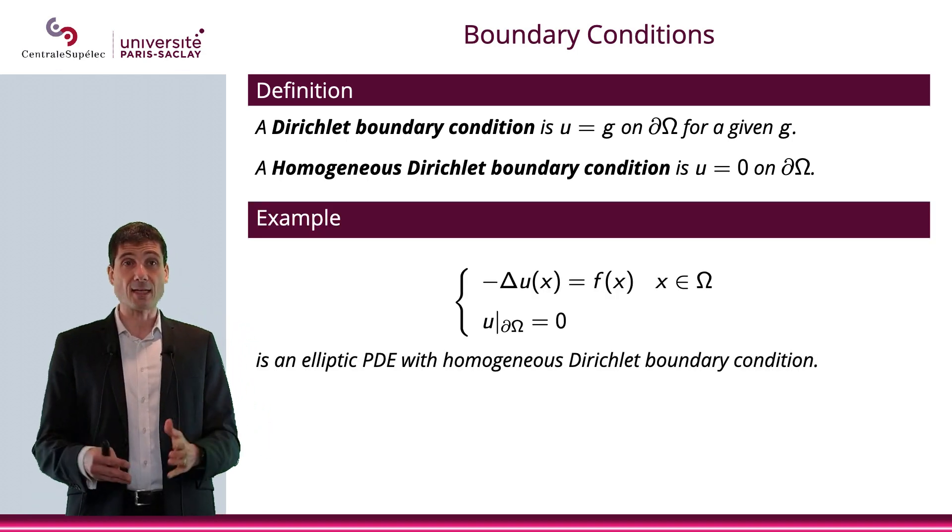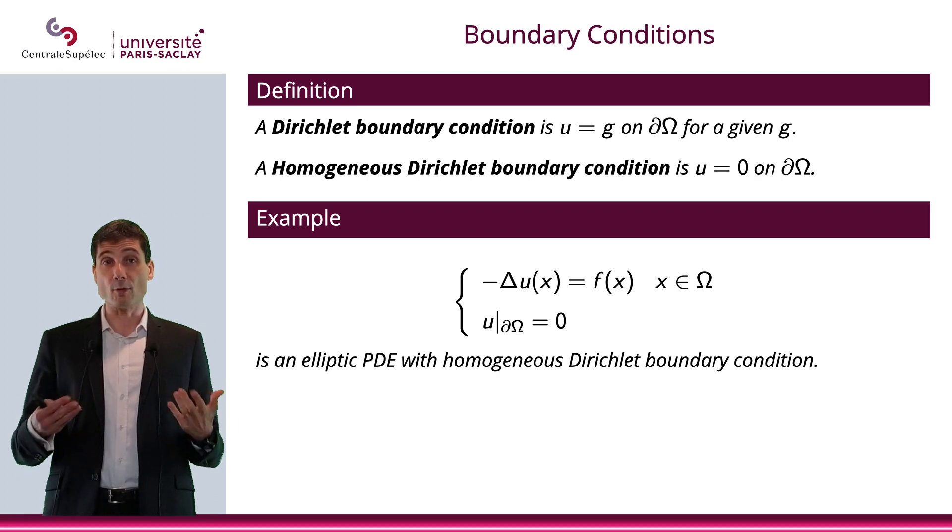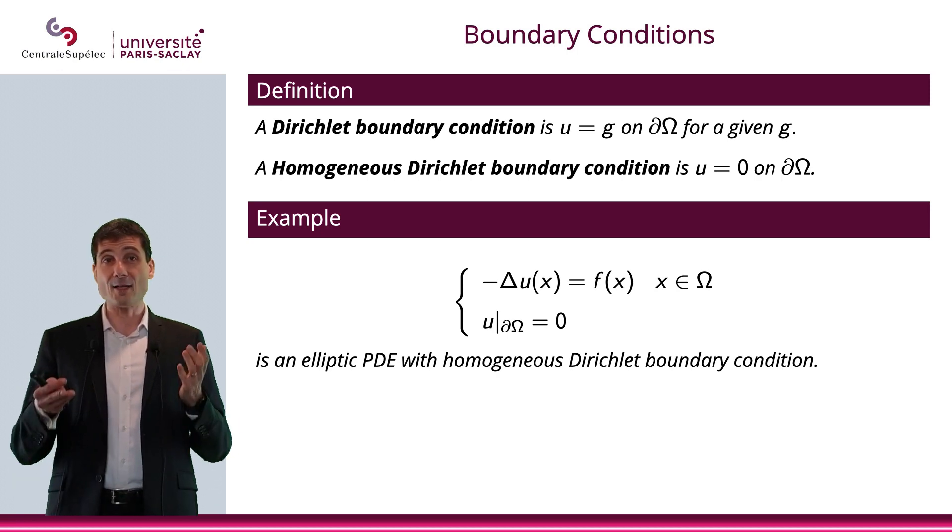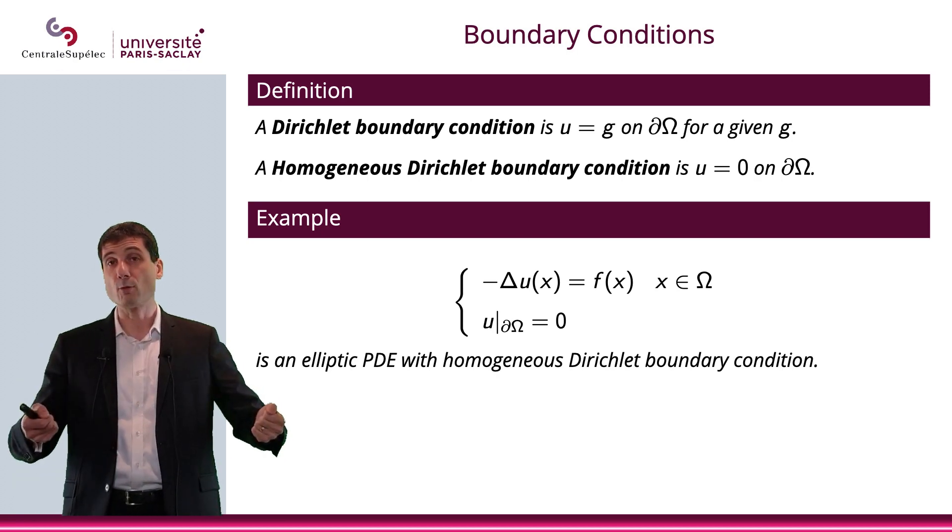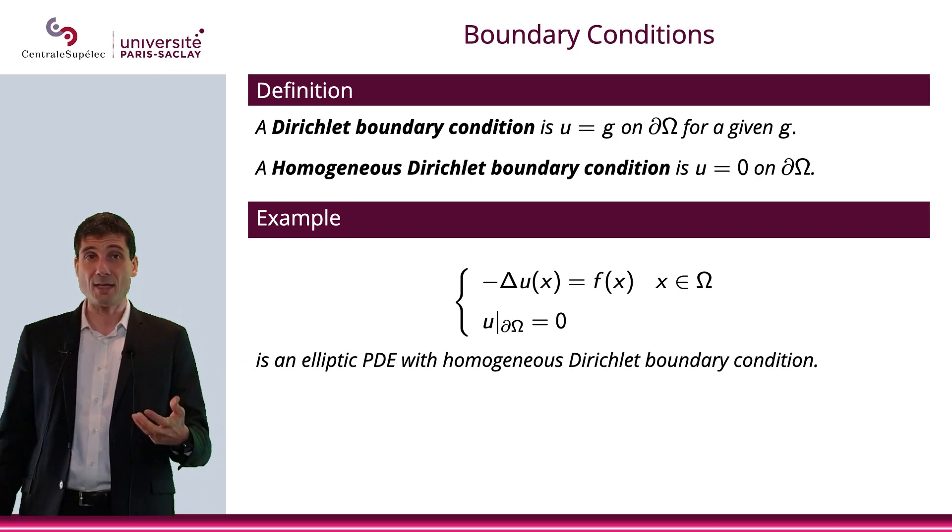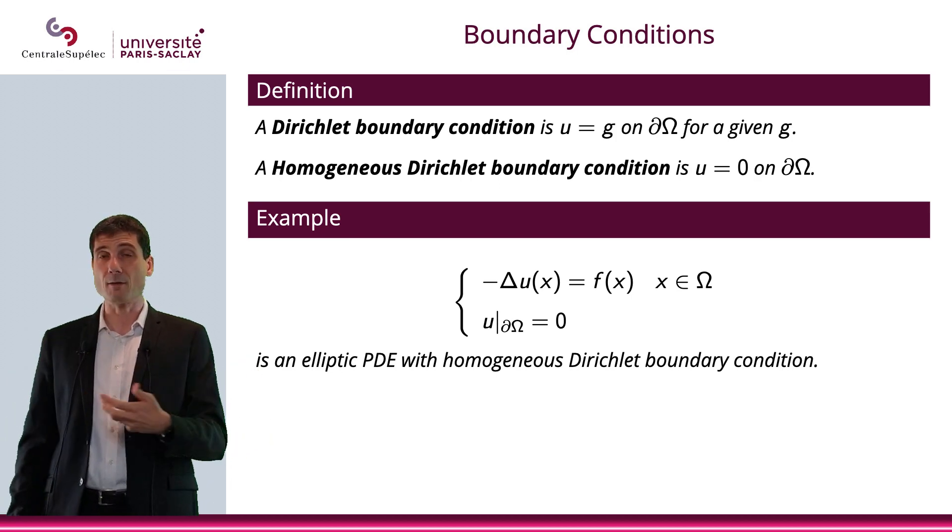Let me give you an example. Basically, minus Laplace U equals F, and you prescribed U to be equal to 0 on the boundary. That is an elliptic PDE with homogeneous Dirichlet boundary condition.